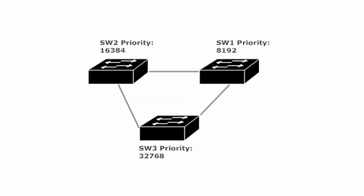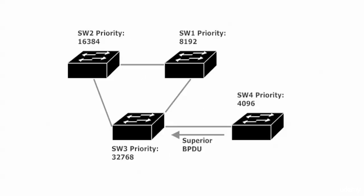If something changes, the network adapts quickly — and in this case maybe it's a change we don't want. Switch 4, which is not online yet, has a priority of 4096 for VLAN 1. If it comes online it would send a superior BPDU into Switch 3 and quickly become the root for VLAN 1. We'll test that first and then proceed with the root guard portion of the lab.